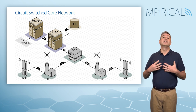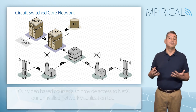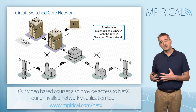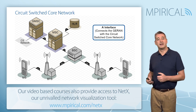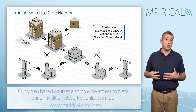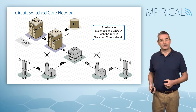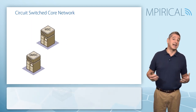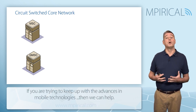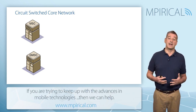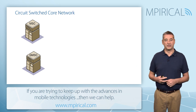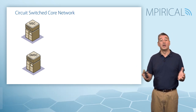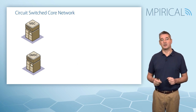As we leave the GRAN we connect to the core network, beginning with the circuit switch core. It connects back to the GRAN via the A interface. The circuit switch core is made up of two key elements: the MSC, or Mobile Switching Center, and the gateway MSC, or Gateway Mobile Switching Center. It's not uncommon to see both functions combined within the same physical architecture.